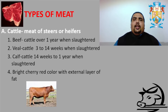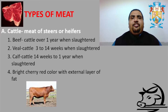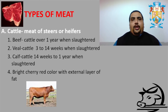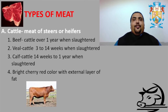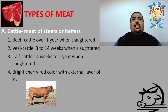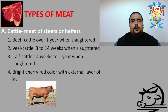Next is the youngest, that is veal meat. Basically it is cattle that is 3 to 14 weeks old when slaughtered — remember, 3 to 14 weeks when slaughtering is called veal meat. Next is the calf, which comes in somewhere in between, that is 14 weeks to 1 year before slaughtering. So these are the different stages when a cow is being slaughtered.